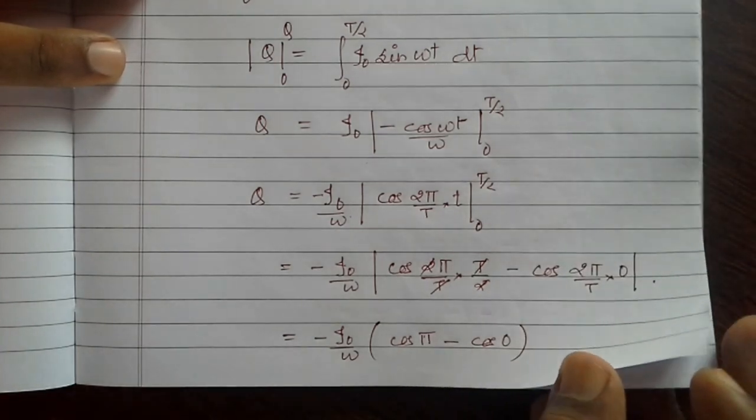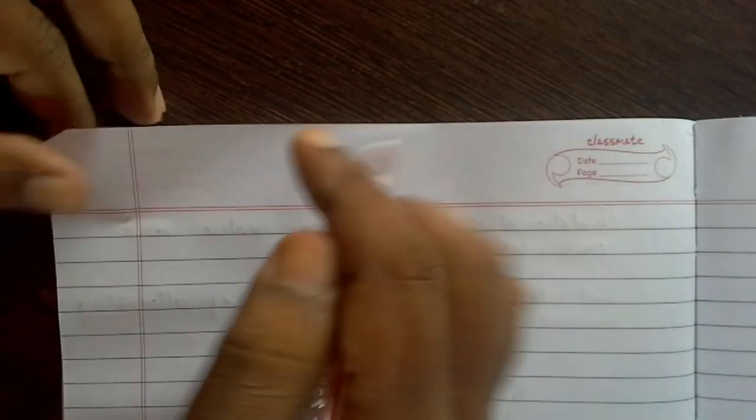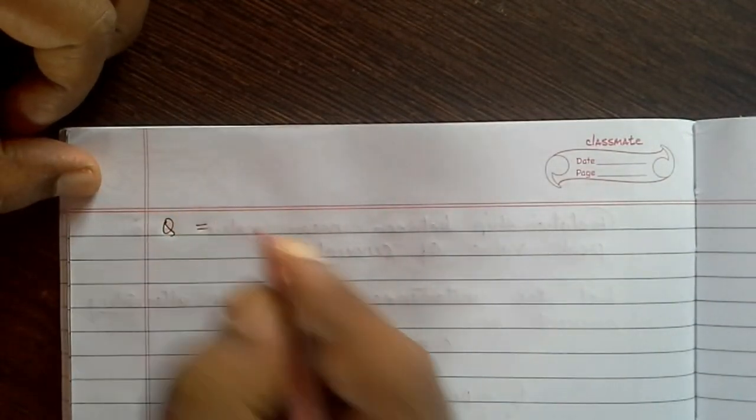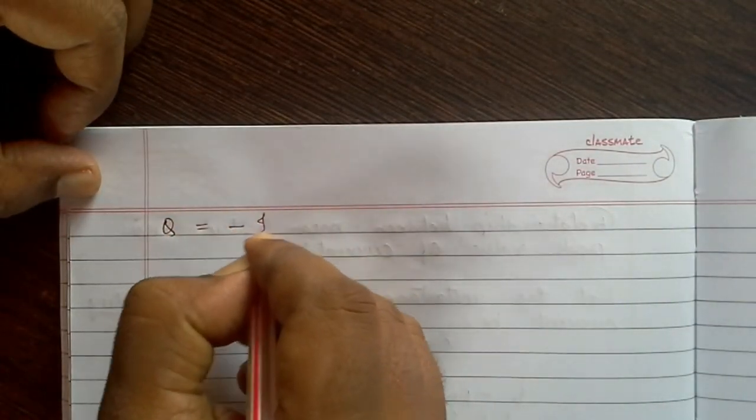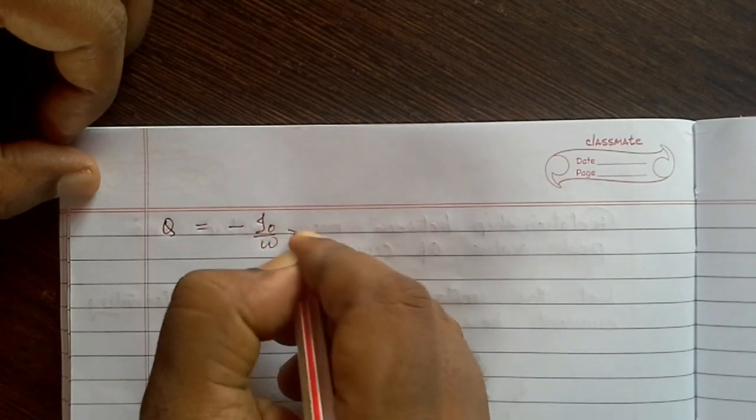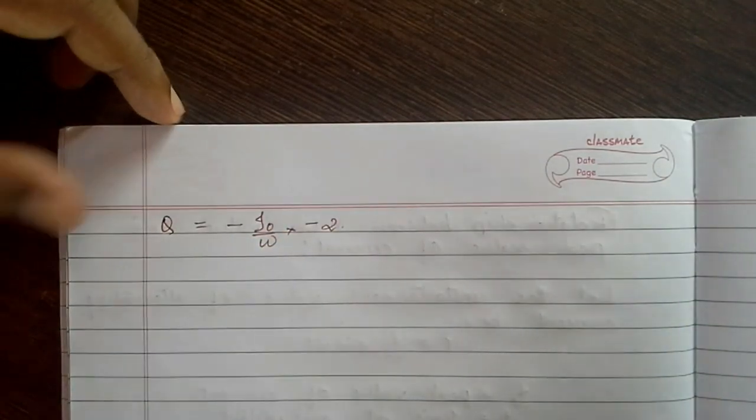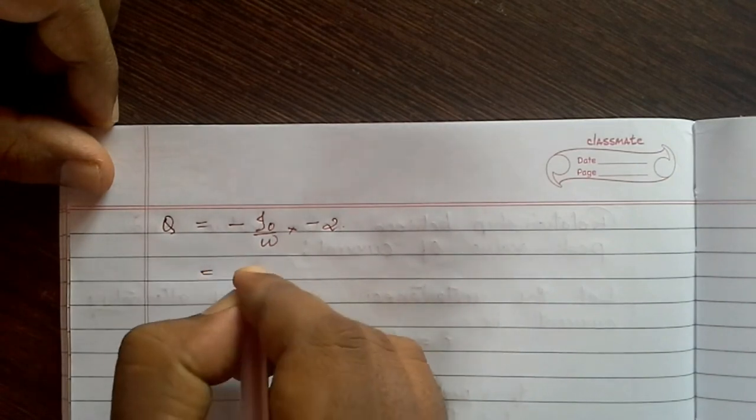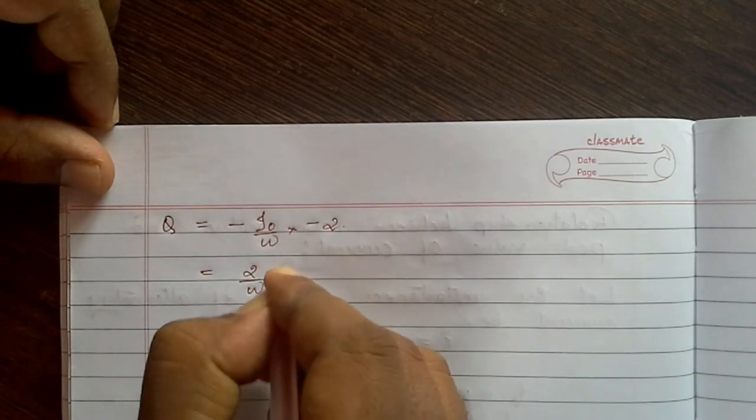Or we can write q equals minus i0 by omega into minus 2, or that is equal to 2 by omega into i0.